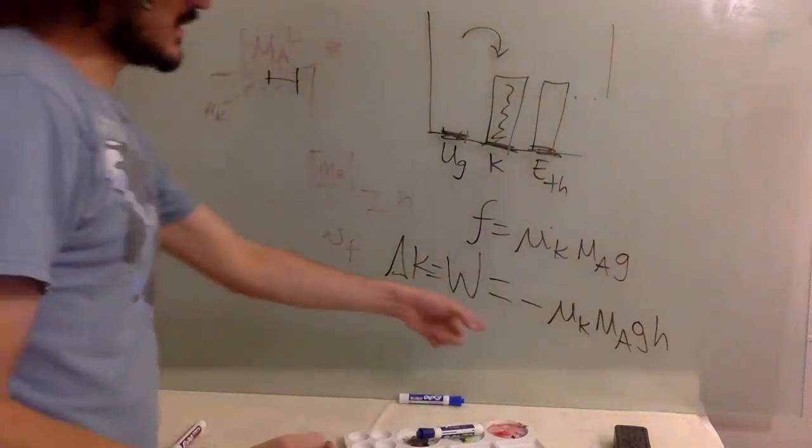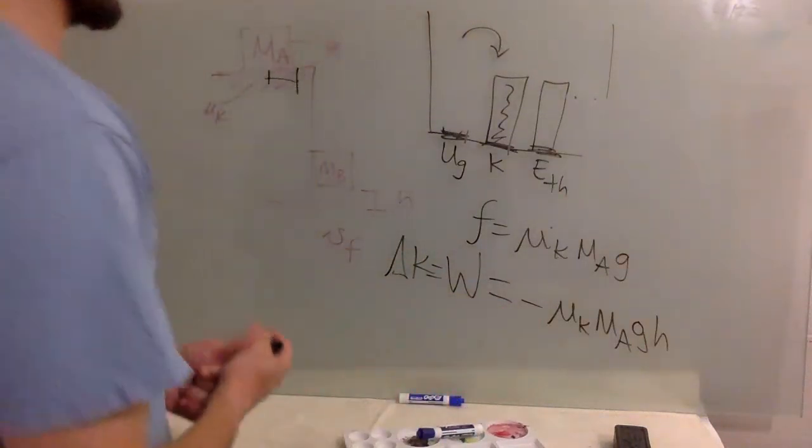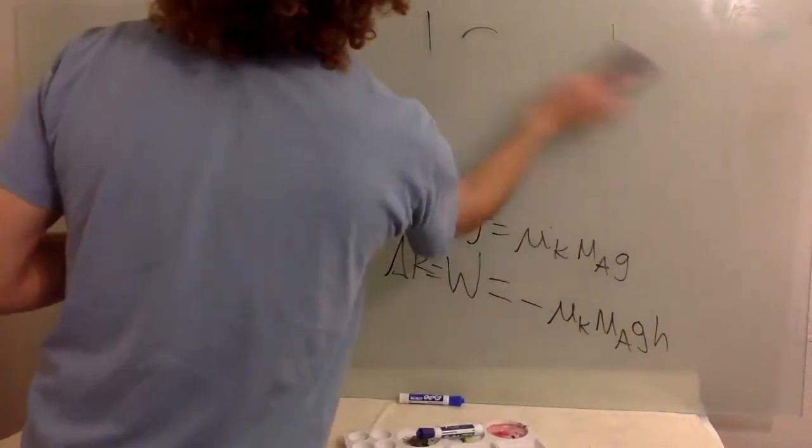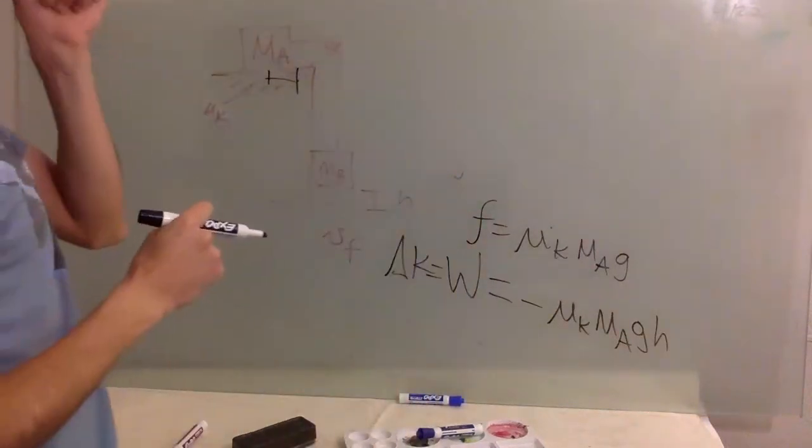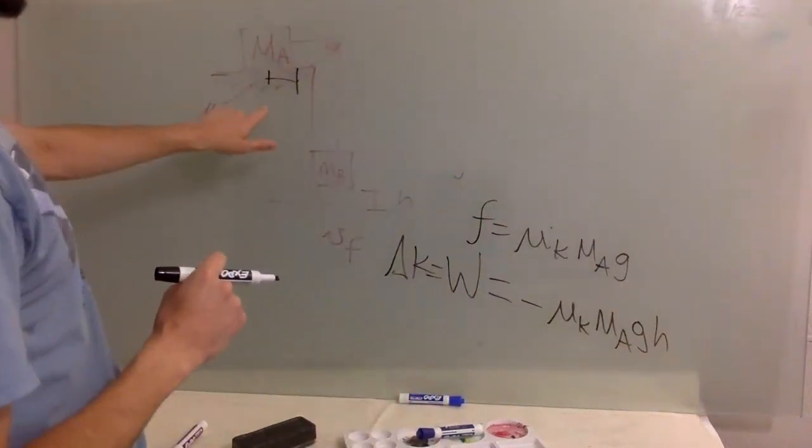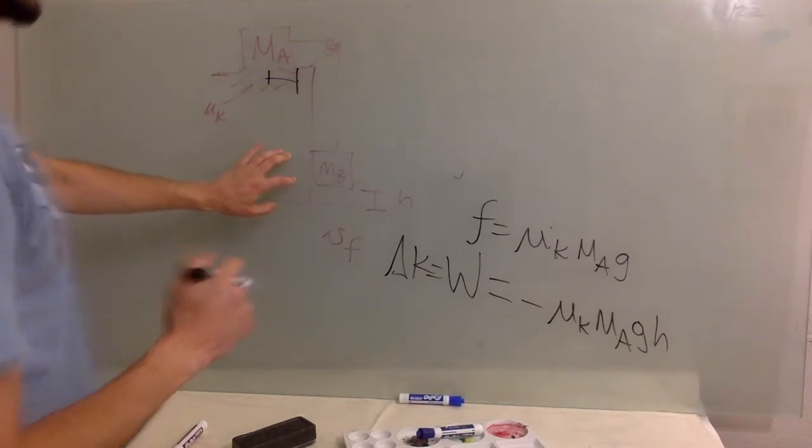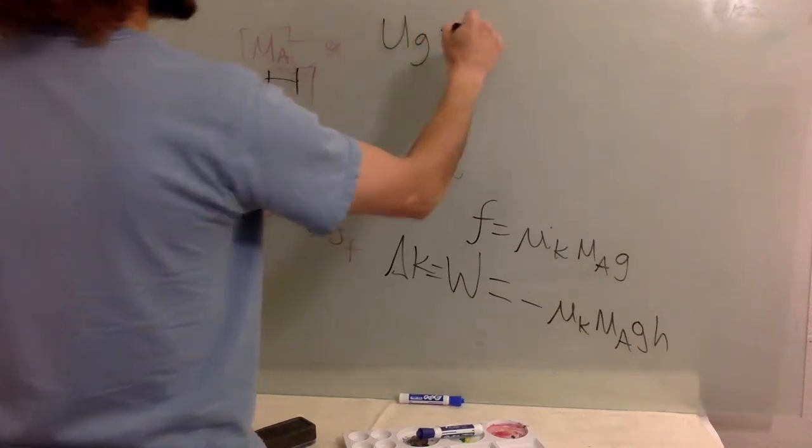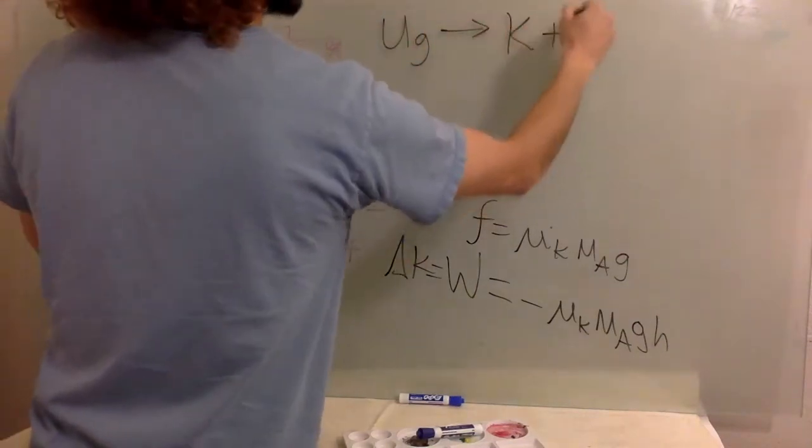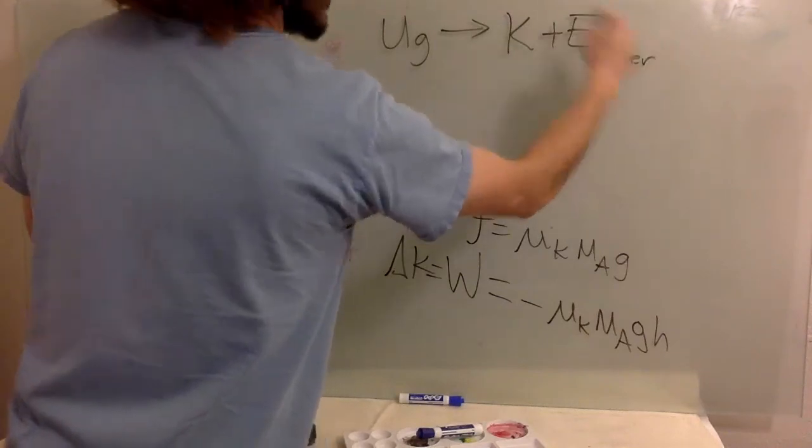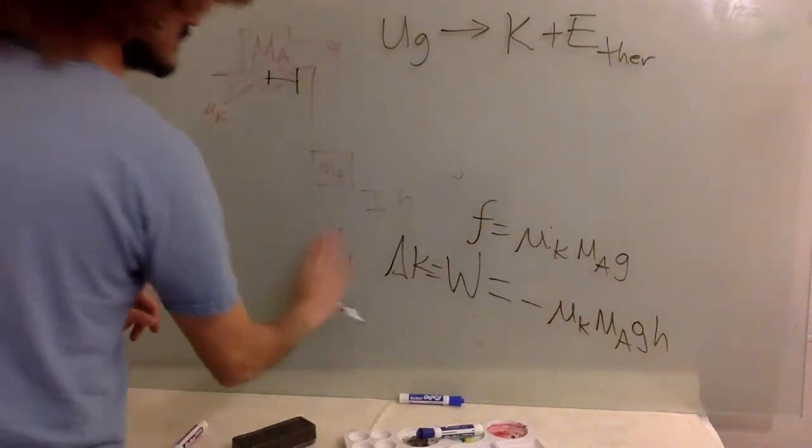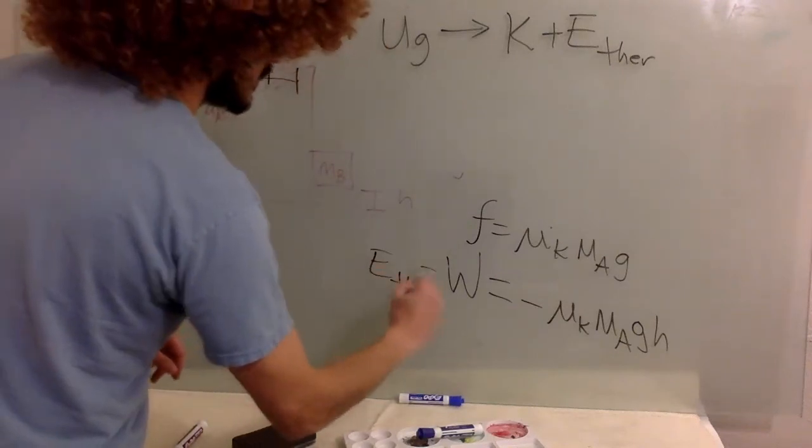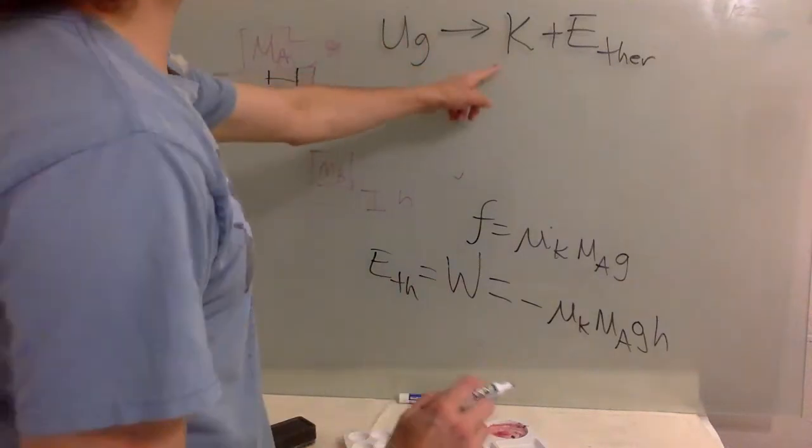It's negative because it's removing kinetic energy that otherwise the system will get. So now let's look at the other part. All the gravitational potential energy becomes kinetic plus thermal. We have calculated the thermal.